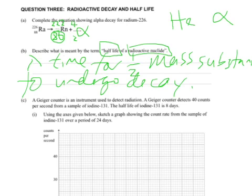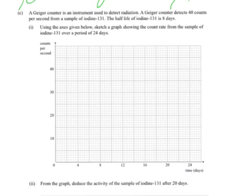Part C. A Geiger counter is an instrument used to detect radiation. A Geiger counter detects 40 counts per second from a sample of iodine-131. The half-life of iodine-131 is 8 days. So using the axes given below, sketch a graph showing the count rate from the sample of iodine over a period of 24 days. Okay. So this is just plotting a graph. You could make a little table first if you like, or you could plot it as you go.